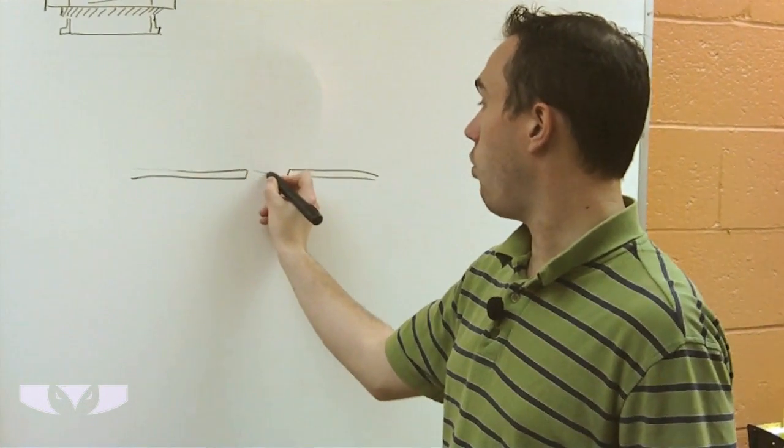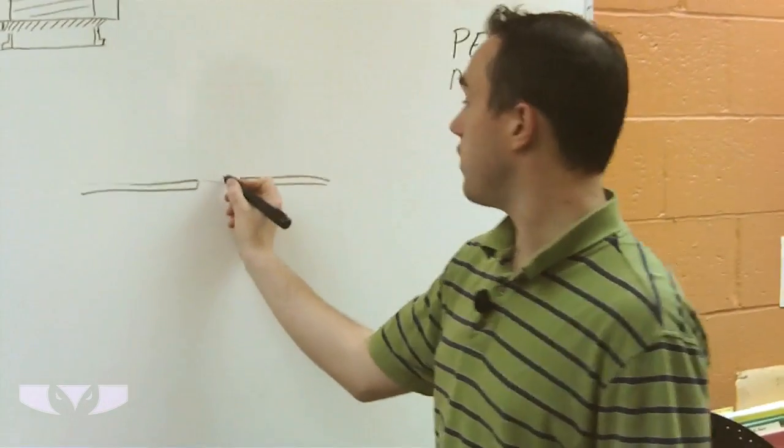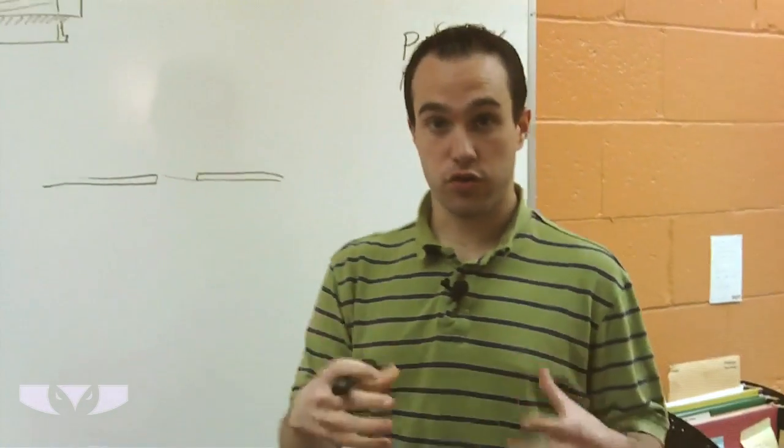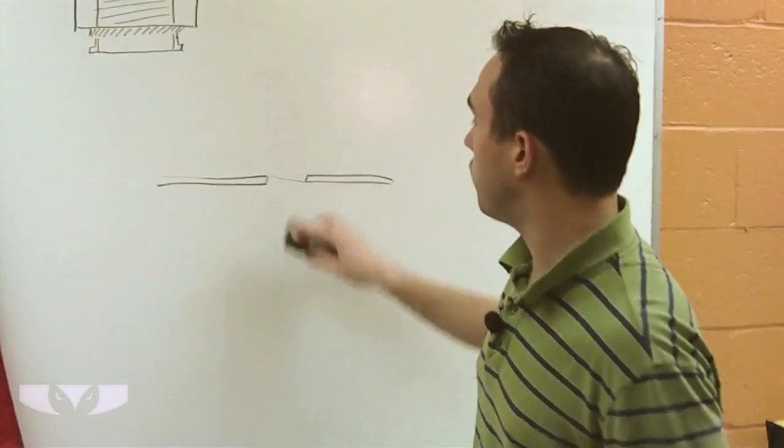So you might get like one line across, one line of threading. And that's just not enough for a screw to grab hold of and it'll just rip out really easily.